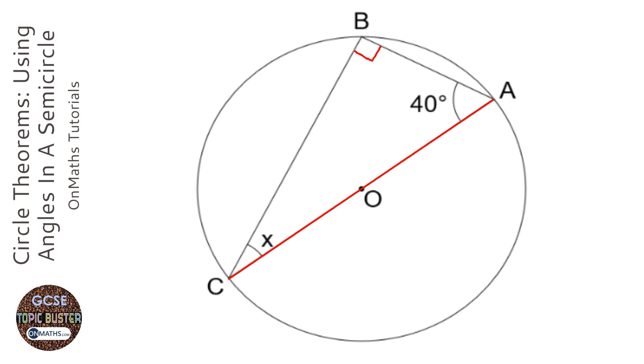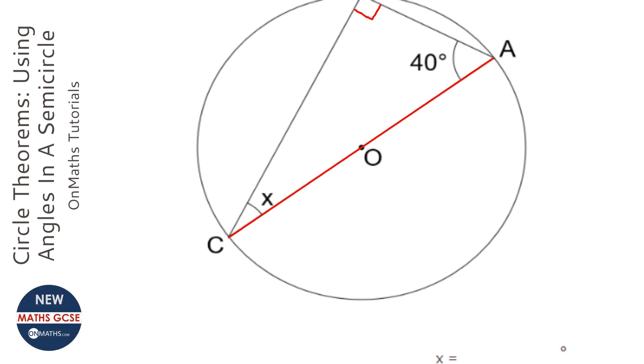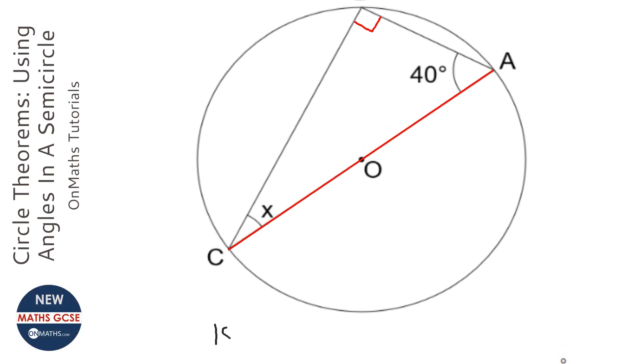So we've got a triangle and we know two of the angles and we're asked for the third one. So the working out here would be 180 take away 40 plus 90.